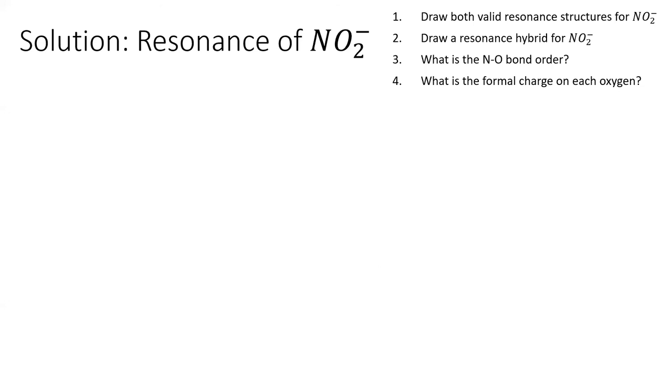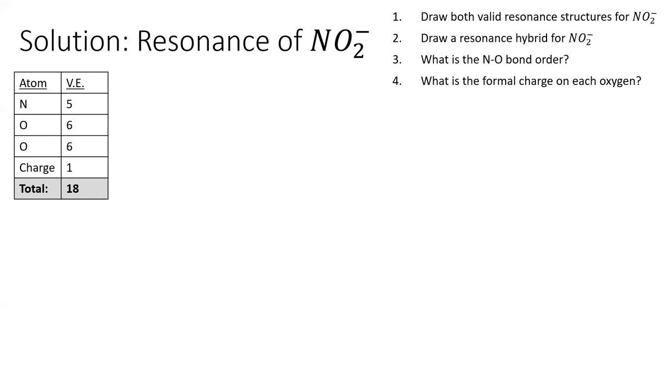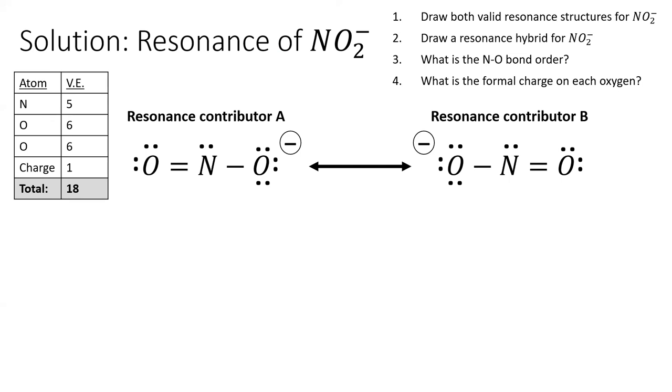To draw two valid Lewis structures for nitrite, we need to go through the steps we practiced in Lesson 8.5. I won't go through them in depth, but I will note that you need to keep the charge in mind when counting valence electrons for this species and many other species included. I determined these are the two valid resonance contributors for nitrite. One has a double bond to the left oxygen, and the other has a double bond to the right oxygen. Notice the formal charges are on different oxygen atoms for these two resonance structures.